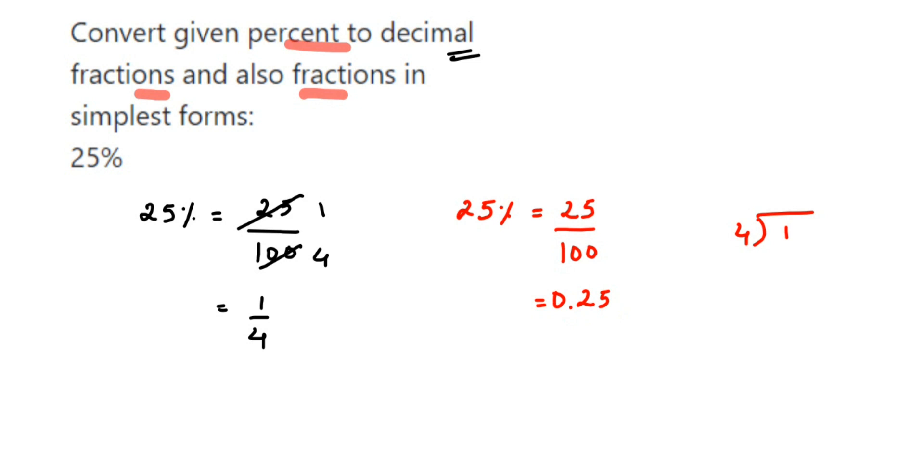So 0.25 is the decimal form. You can divide 4 and 1, you will get the same answer, but since you're going to take a lot of time, you can do the simple way. So this is how you can convert into the fraction form and decimal form.